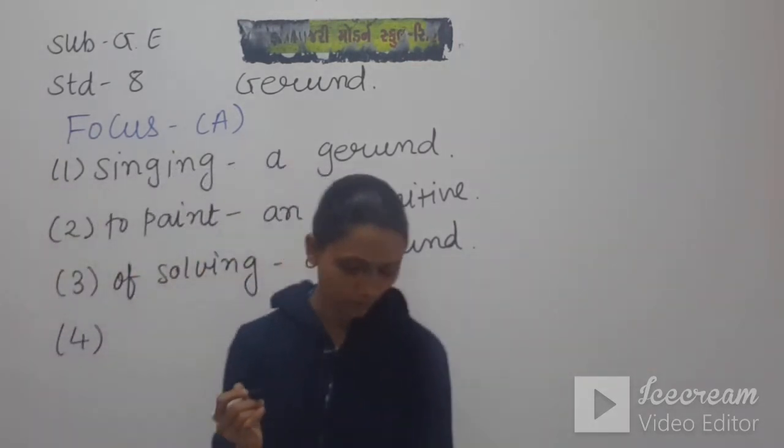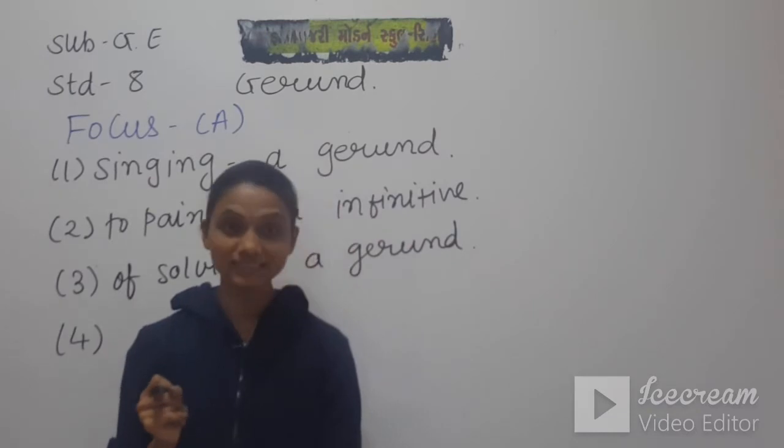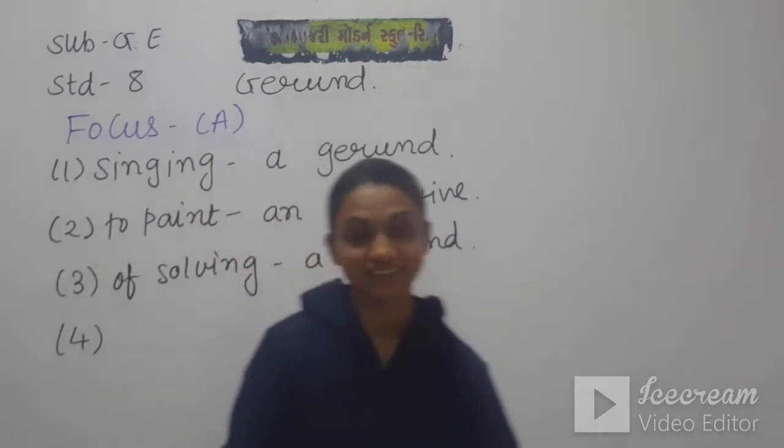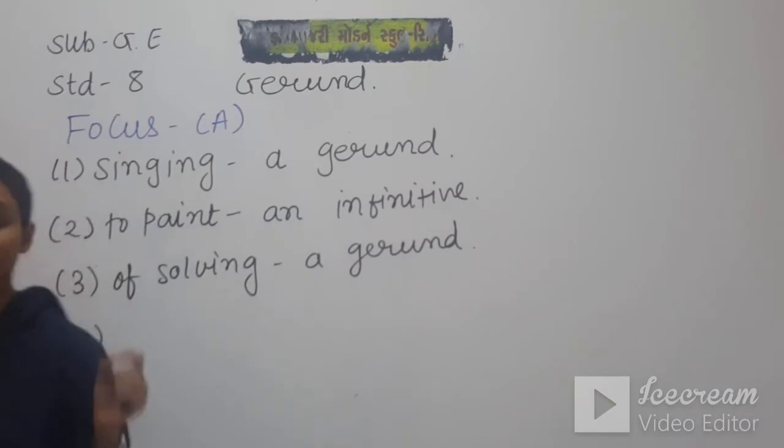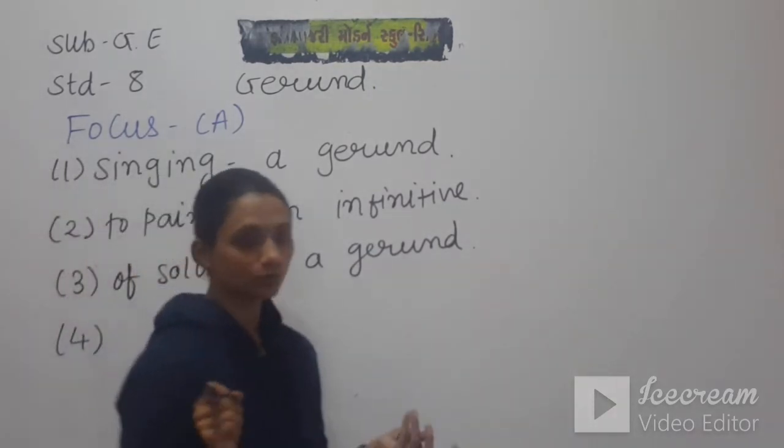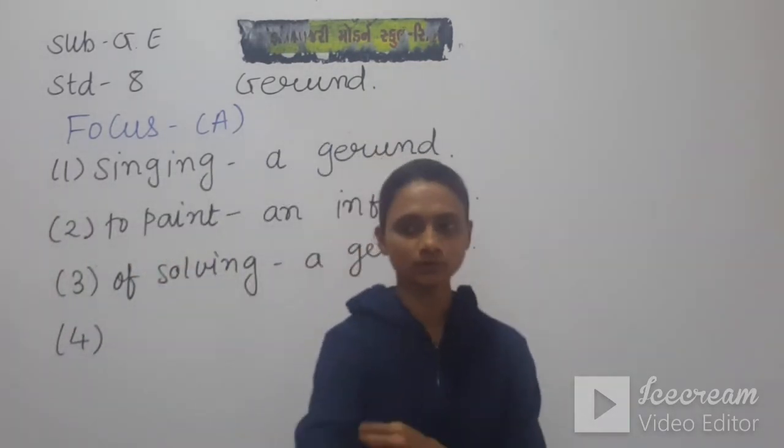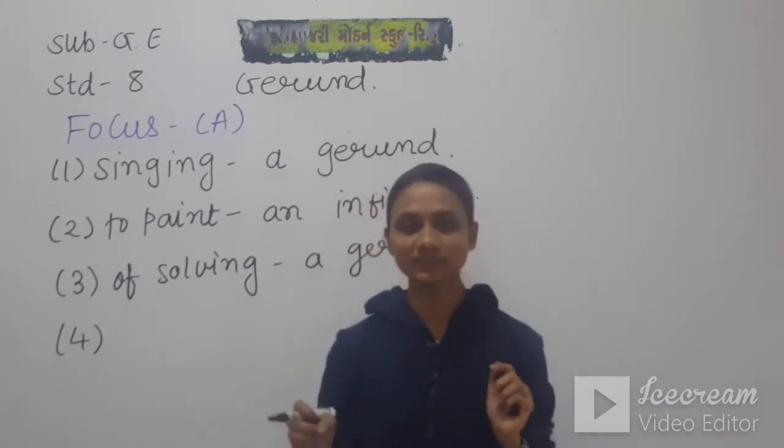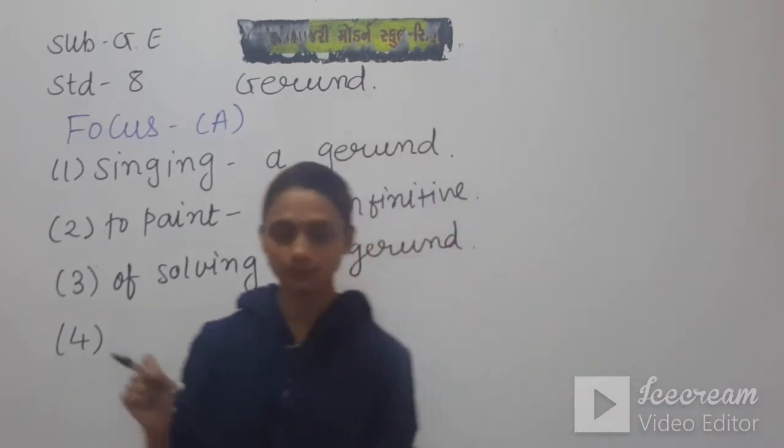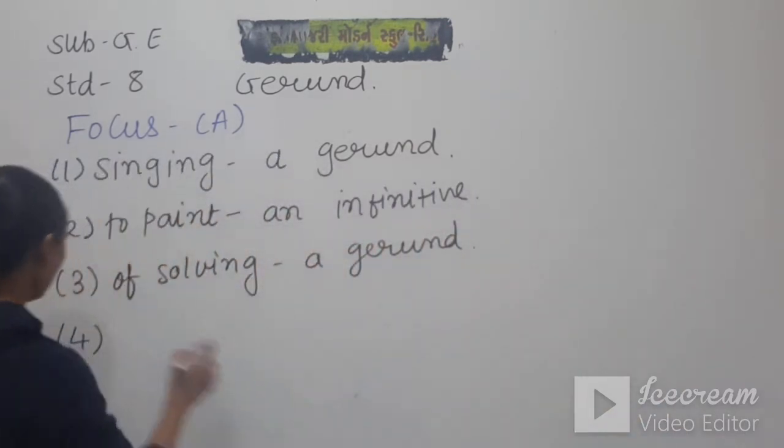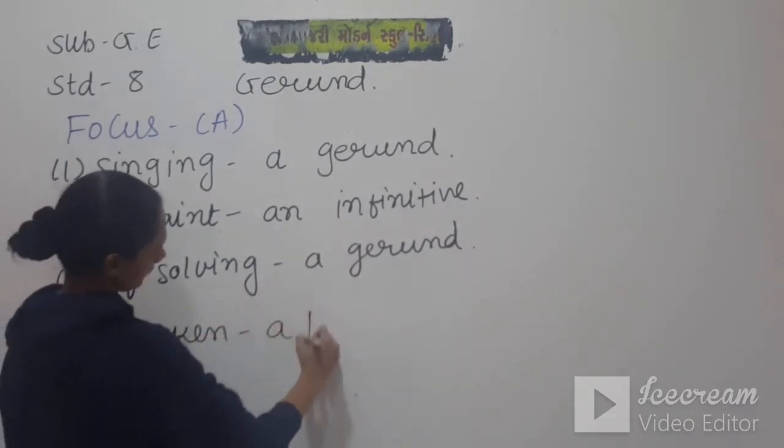Number four: even the carpenter cannot repair this broken chair. 'Broken' - we have here it means it is participle. So it is participle and it is past participle as we have 'broken'.